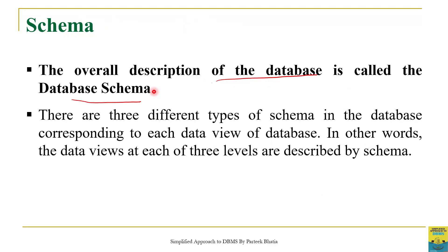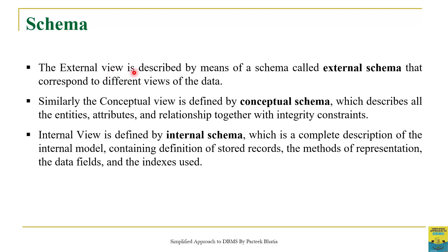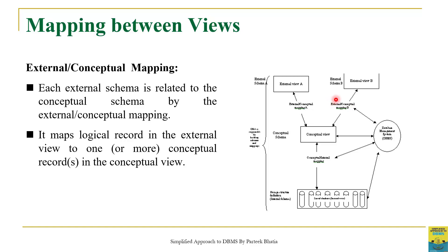There is another concept called schema. The overall description of a database is called the database schema. We have three levels or three views, so there will be three different schemas. The data at the external view is described in the external schema; the information at the conceptual view is described in the conceptual schema; and the information at the internal view is described in the internal schema. These schemas define the data available at each respective level.